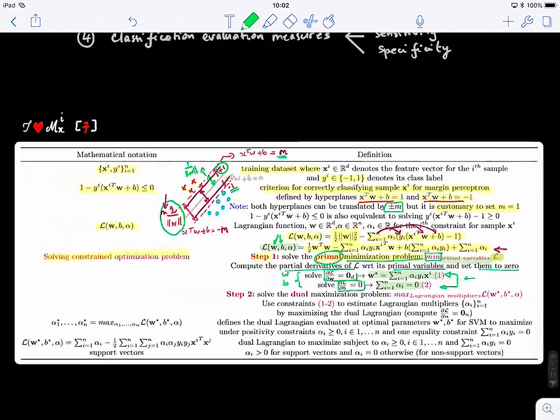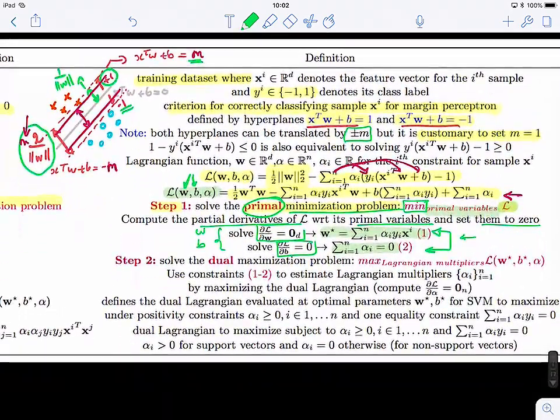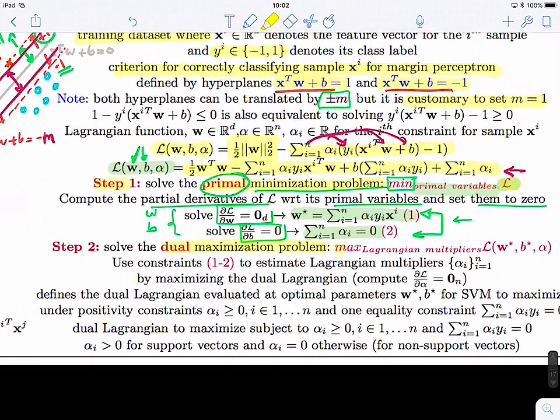Now what we're going to do next is the next step will be to solve what we call the dual maximization problem. How to do that? We want to maximize the Lagrangian multipliers over the alphas, but of what? Of the Lagrangian, which was updated using these two constraints.